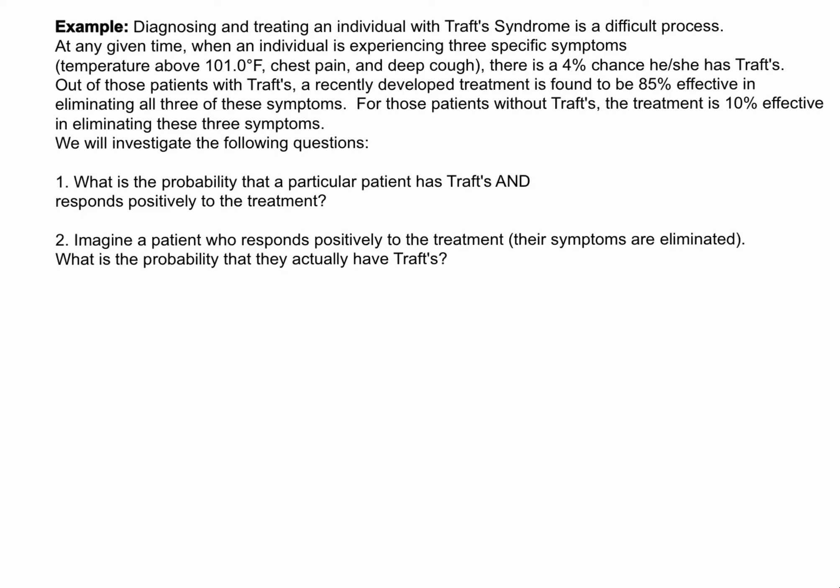In this problem, we will be using conditional probability to answer some important questions. We're given an example about a particular syndrome, and we're told that diagnosing and treating this syndrome can be very difficult. Patients who come in experiencing three symptoms — temperature above 101, chest pain, and a deep cough — based on previous statistics, have a 4% chance of having what's called Traff's disease, or Traff's syndrome.